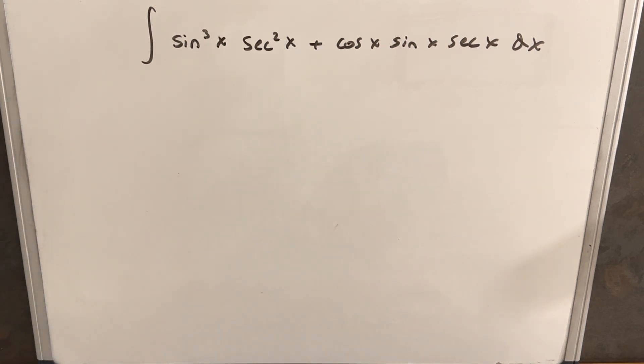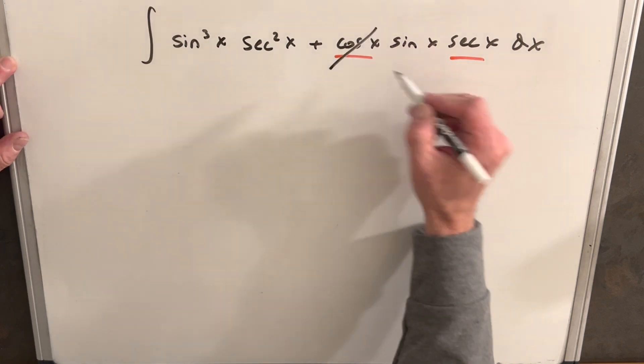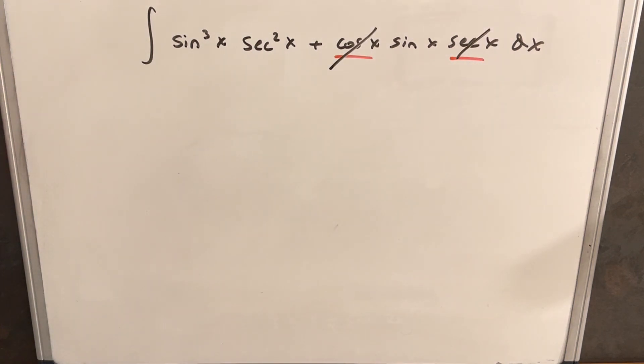The first thing I want to notice, we have a cosine and a secant, and secant is just 1 over cosine, so we can essentially just right off the bat cancel that out, because that's just going to be a 1.